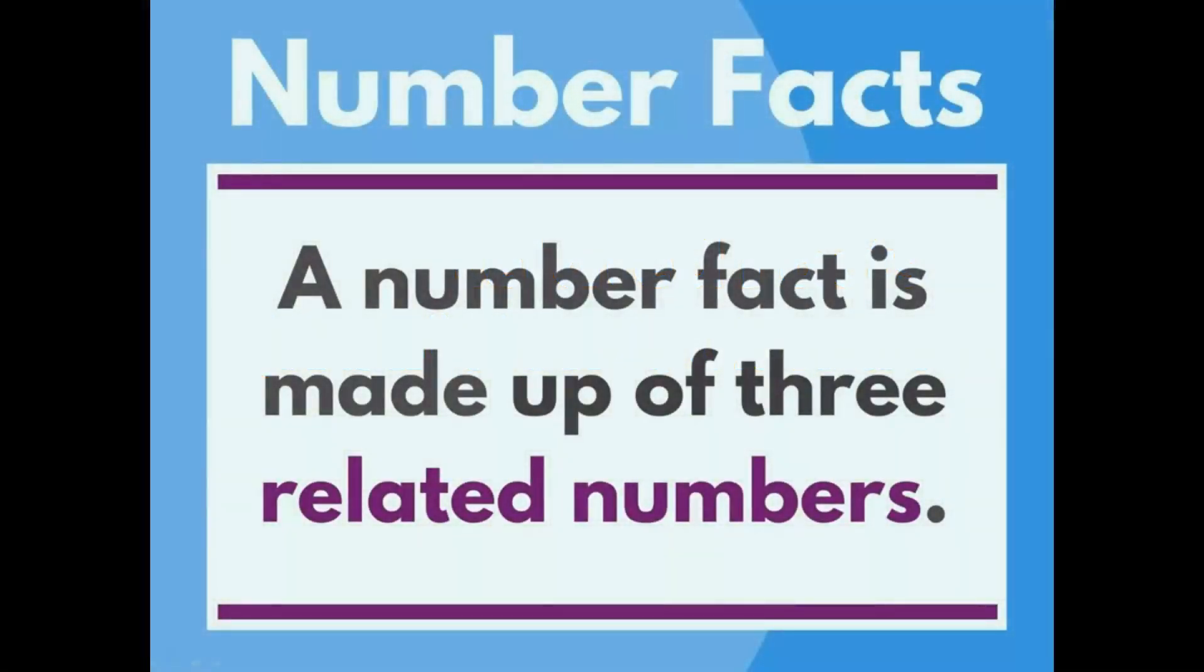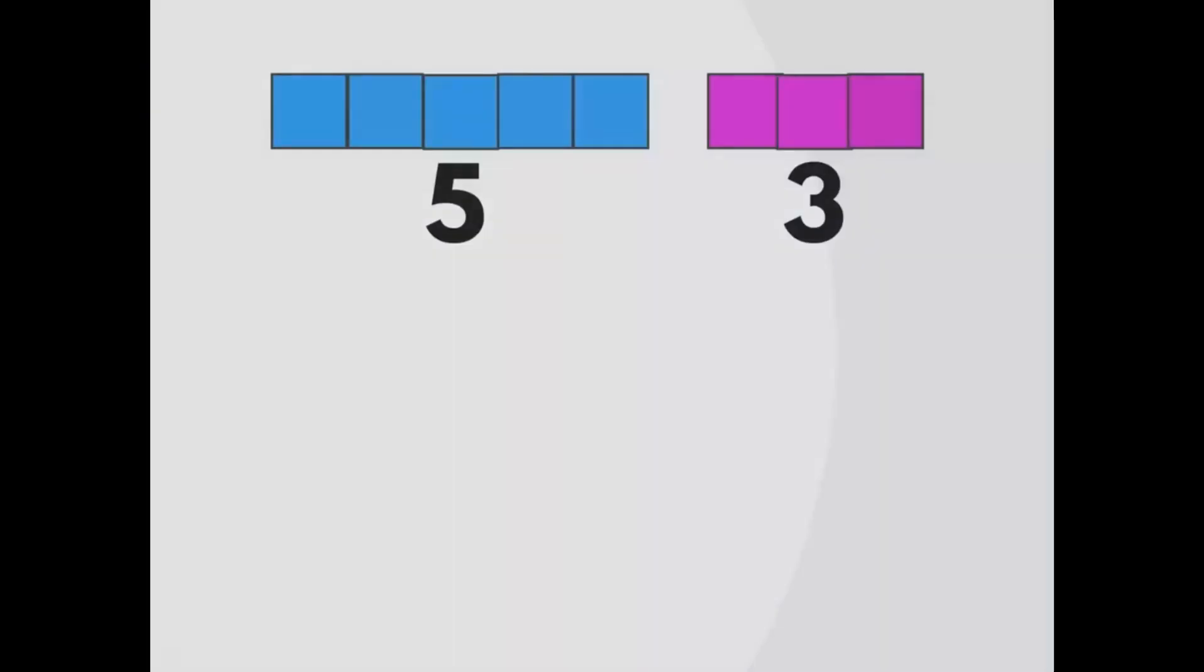A number fact is made up of three related numbers. Let's take these tiles. I have five blue and three pink. If I add those tiles together, I have a total of eight tiles.